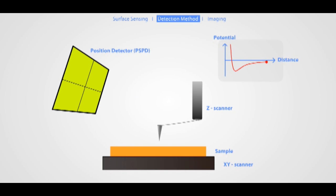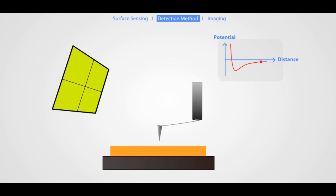An AFM has a Z scanner that moves the cantilever up and down, an XY scanner that moves the sample back and forth underneath the cantilever, and a position detector that records the bending of the cantilever. The position sensor works by tracking a laser beam that is reflected off the flat top of the cantilever.